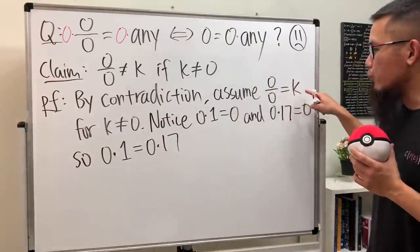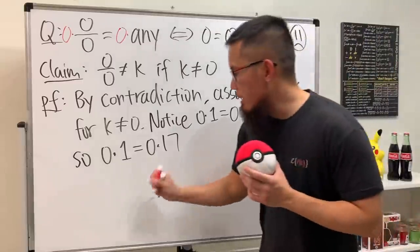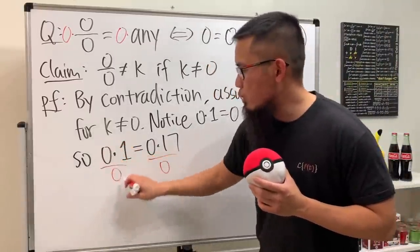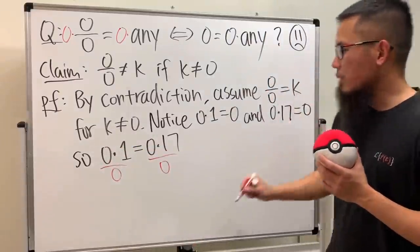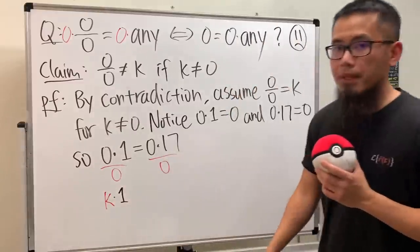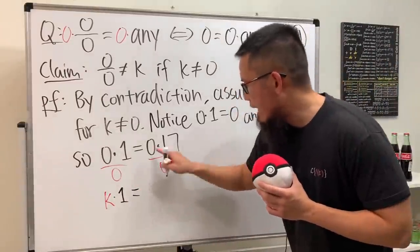Now because we have zero over zero is equal to k, we can legitimately divide both sides by zero. And then when we see zero over zero, well by our assumption that's equal to k. So on the left hand side we have k times one and then on the right hand side we have k times 17.